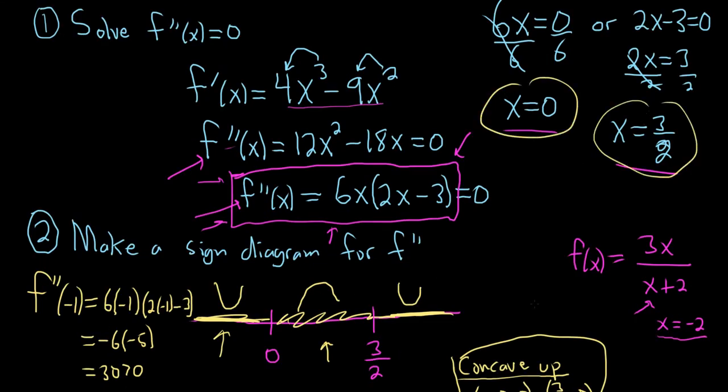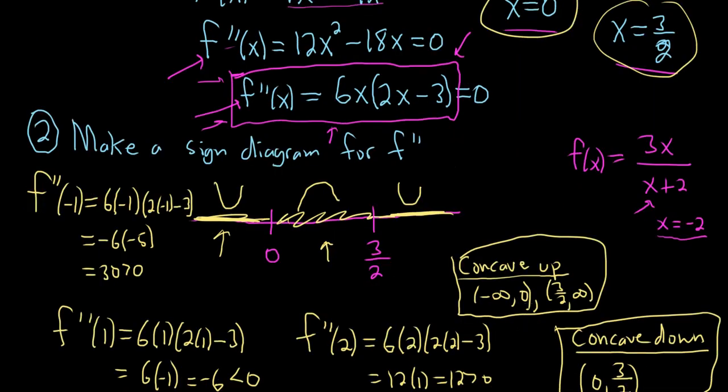Then you take these and you put them on a number line. This is called a sign diagram for the second derivative. Then you just pick test points. You pick one over here on the left, you plug it into the second derivative. It was positive, so it's concave up. We picked one here in the middle, plug it into the second derivative. It was negative, so it's concave down. We picked one here, we picked two that was positive, so it's concave up.